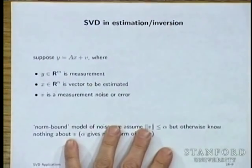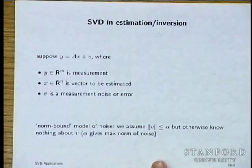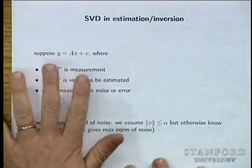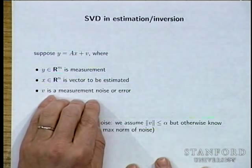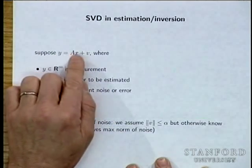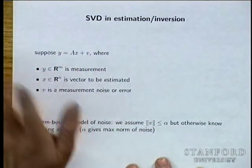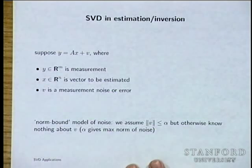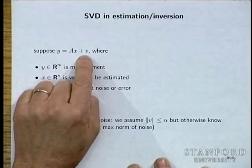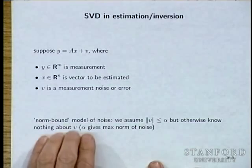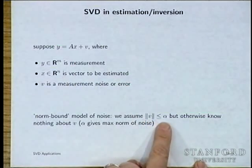In estimation and inversion: Y = AX + V, where Y is the measurement, V is measurement noise, and X is what you want to estimate. One approach is least squares — estimate X̂ = A† Y = (A^T A)⁻¹ A^T Y — the X minimizing the discrepancy between what you measured and what you would have measured if the parameter were X̂.